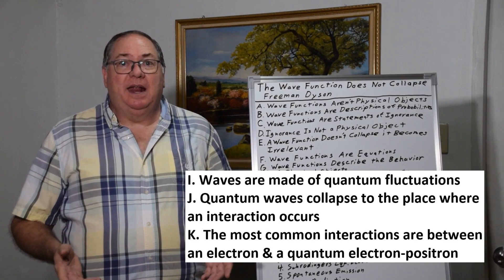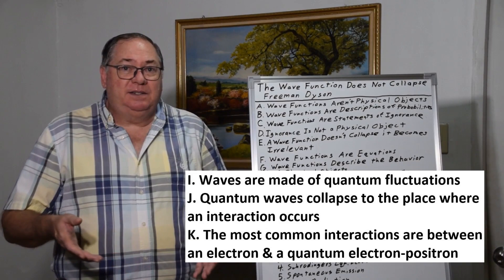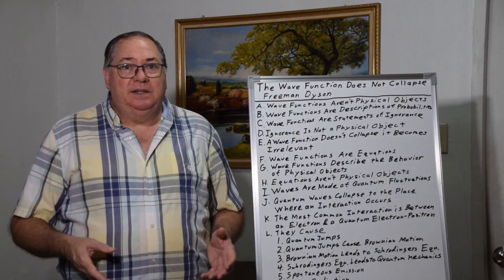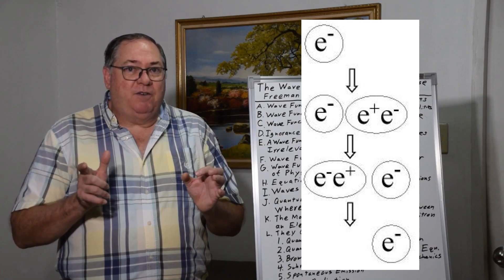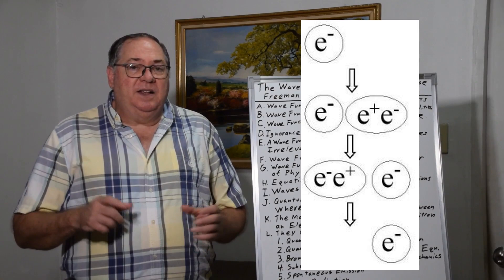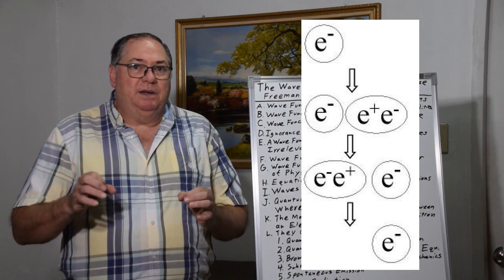Now to truly understand quantum mechanics, we need to know what type of causes give us the effects we see. The primary cause that I discovered in my quantum field theory research is an electron interacting with a quantum electron-positron, where the positron annihilates with the electron and the new electron becomes free.